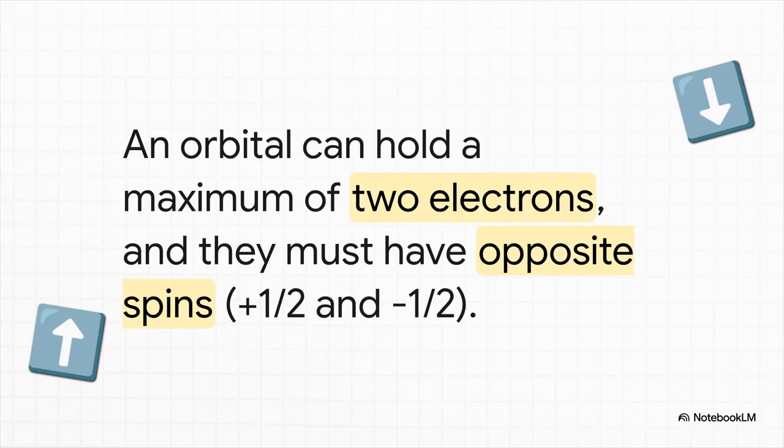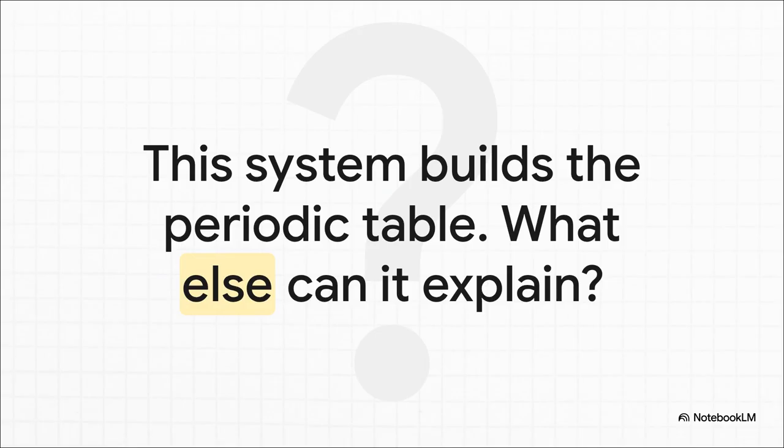And that, right there, is why any single orbital can only ever hold a maximum of two electrons. And here's the ultimate takeaway. This incredibly elegant set of rules, this four-number address system, and the exclusion principle, it's not just some abstract idea.